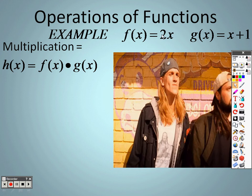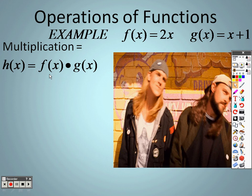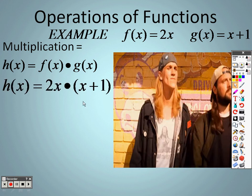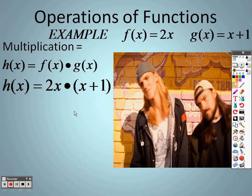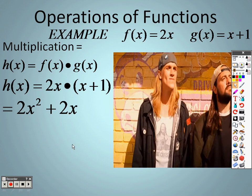So I have 2x and an x plus 1. So I plug that in right here for f of x. So it's 2x times x plus 1. So 2x times x is 2x squared. 2x times 1 is 2x. And there's a multiplication with them.